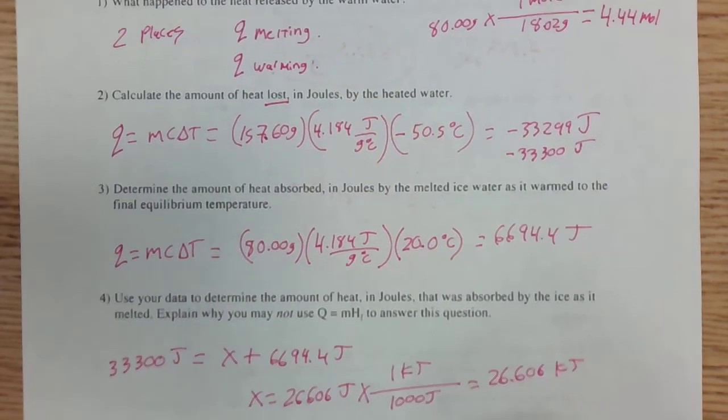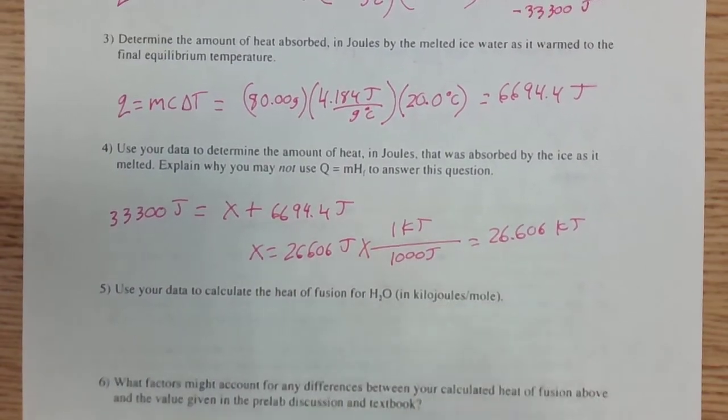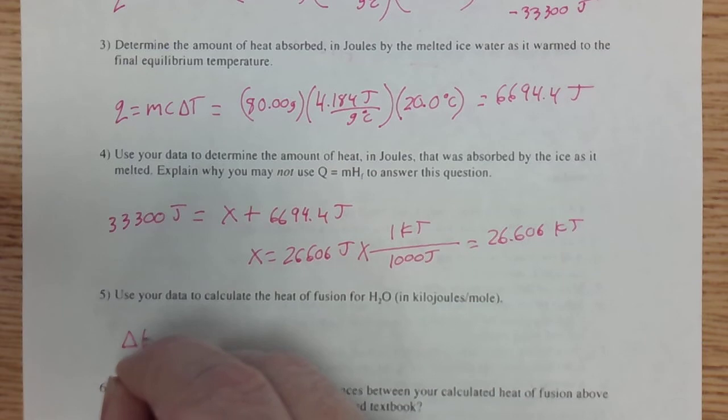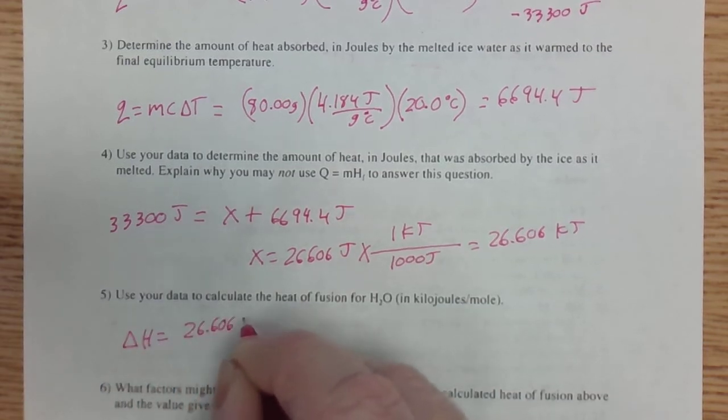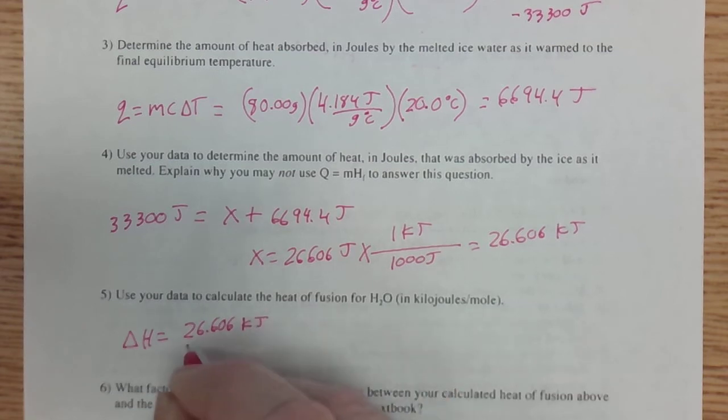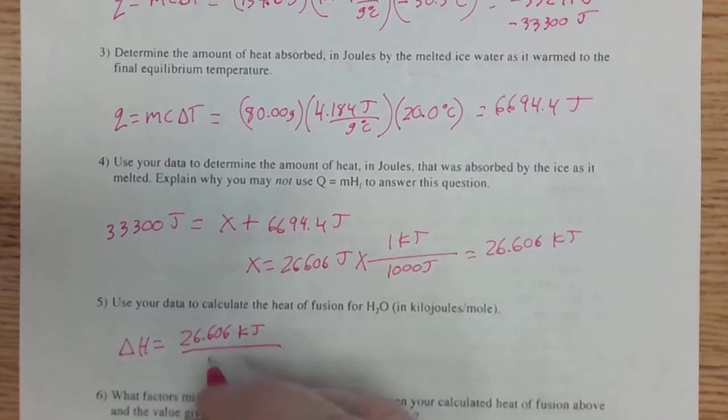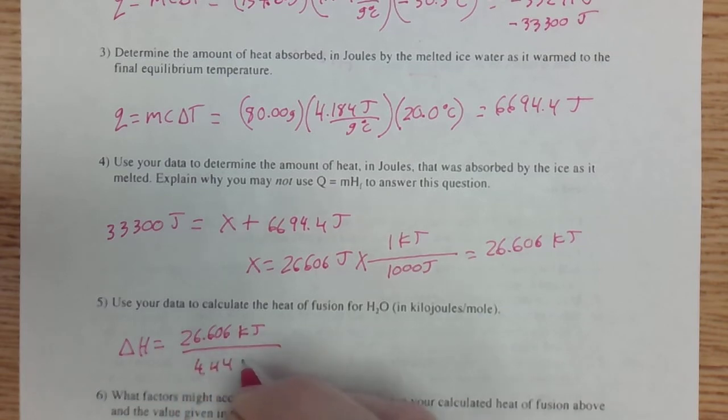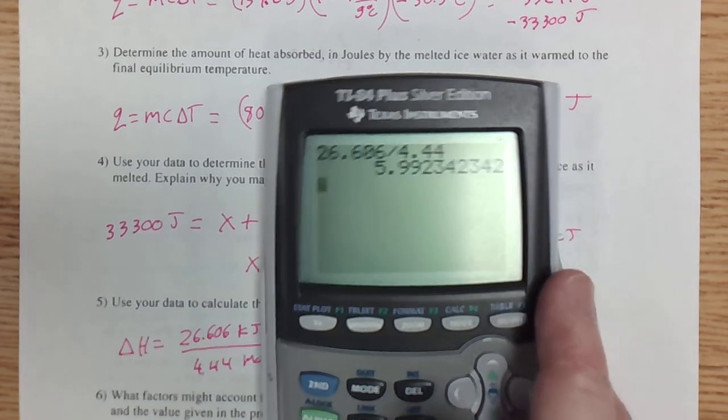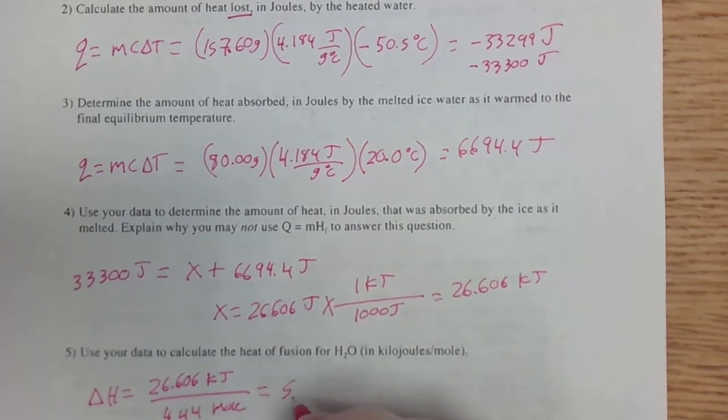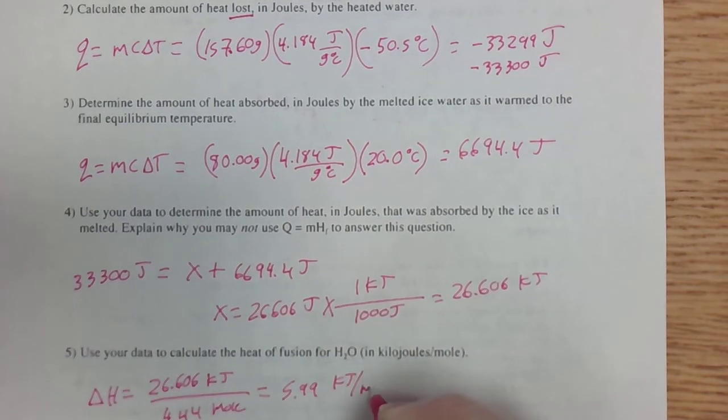So down here, to calculate the heat of fusion in kilojoules per mole, I take 26.606 kilojoules. I divide that by 4.44 moles, and what do we get? 26.606 divided by 4.44, and I get 5.99 kilojoules per mole.